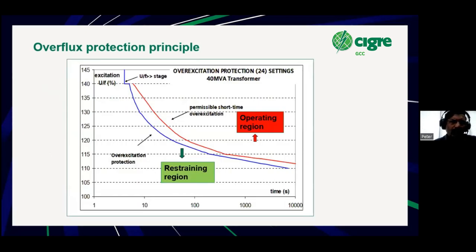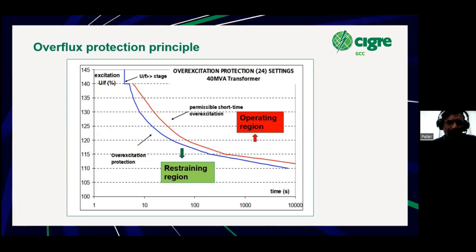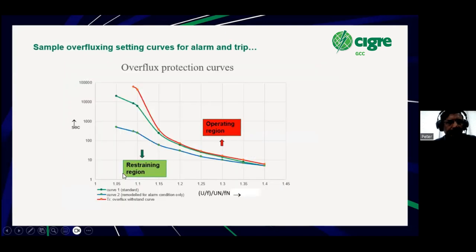The overflux protection principle is that the relay senses voltage divided by frequency (V/Hz). Based on the settings, it can either give an alarm or issue a trip signal. It depends on the protection philosophy of utilities whether they use it for alarm or trip, or disable the overflux protection. This has to be coordinated with the actual transformer overflux curve. The red is the permissible short time overexcitation of the transformer, and it can have a definite time setting or follow this curve with some margins. The red one is the transformer curve, the green one is a trip curve, and the blue one is the alarm curve.